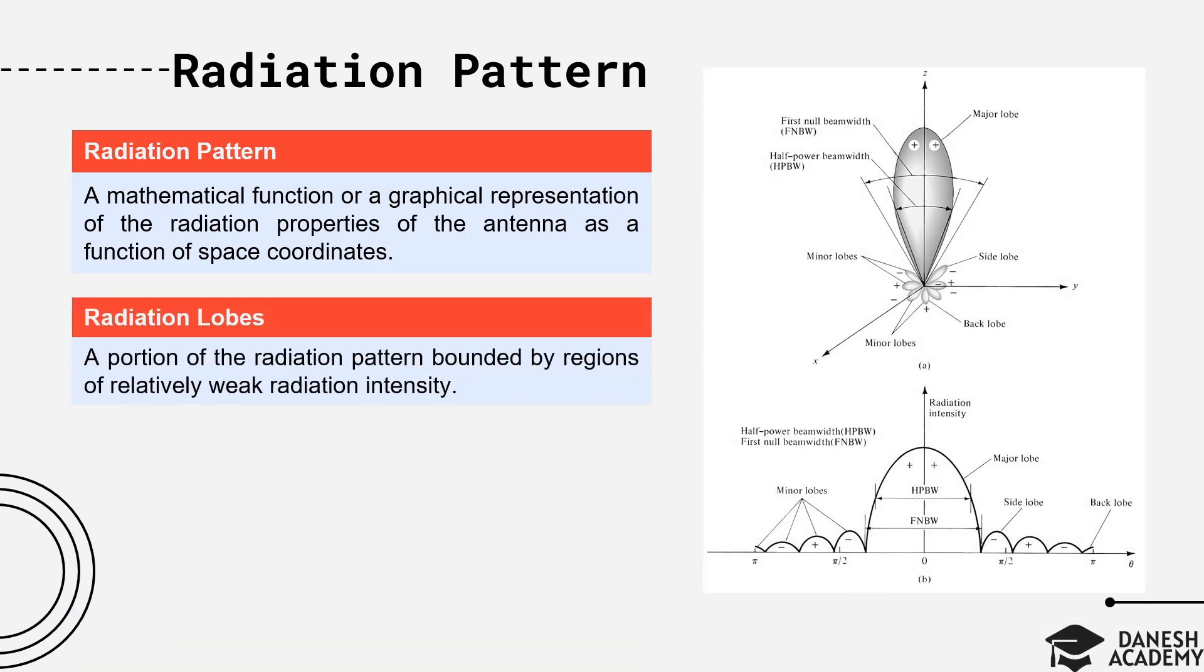Various parts of a radiation pattern are referred to as lobes. A radiation lobe is defined as a portion of the radiation pattern bounded by regions of relatively weak radiation intensity. Figure A demonstrates a symmetrical three-dimensional polar pattern with a number of radiation lobes and figure B demonstrates the linear plot of the radiation intensity also called power pattern of the antenna. As shown in the figure, radiation lobes are subclassified into major or main lobe, minor or side lobes, and back lobe.